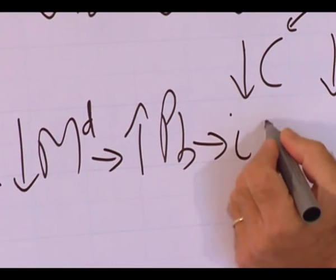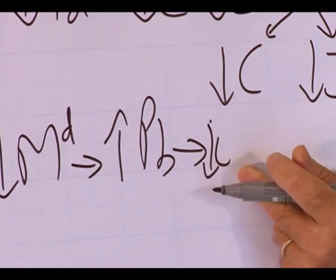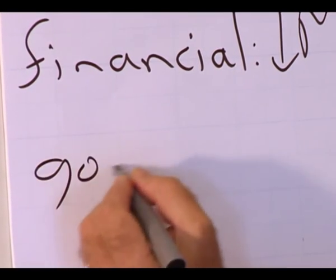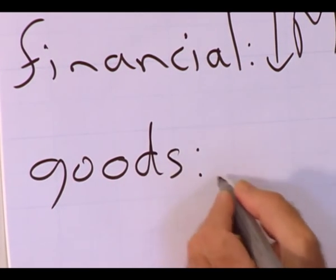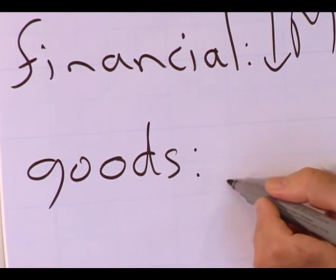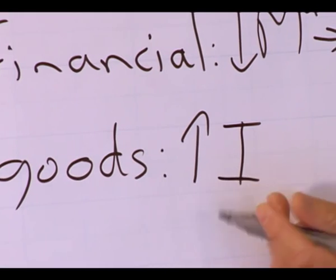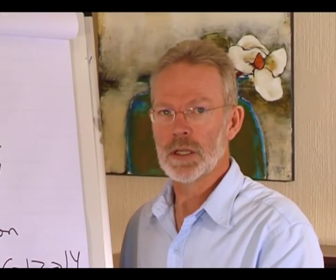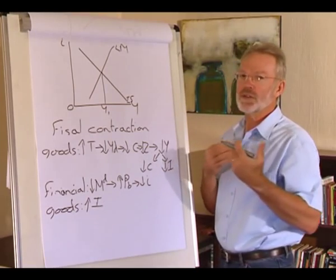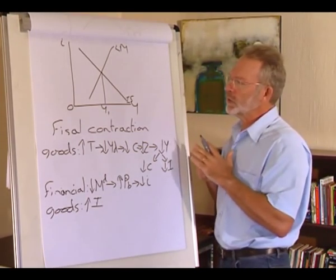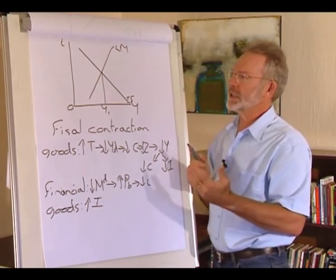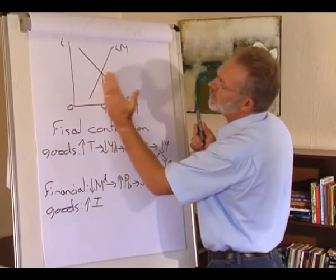The decrease in the interest rate impacts investment spending, so we move over to the goods market. The decrease in interest rate increases investment spending. We have now explained the impact of taxes on the level of output, but we still need to show that an increase in taxes led to a decrease in demand for goods and services, so the IS curve will shift to the left.